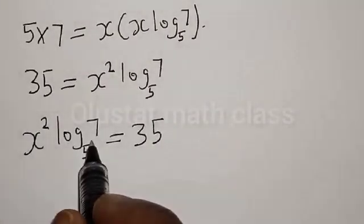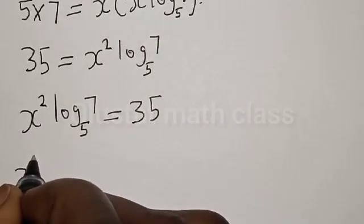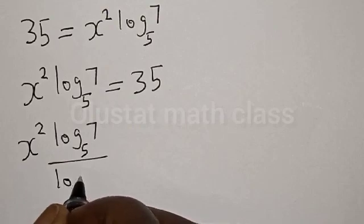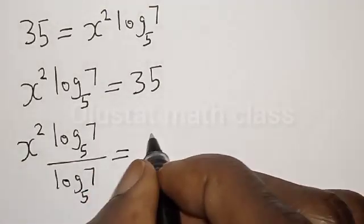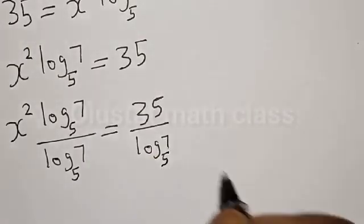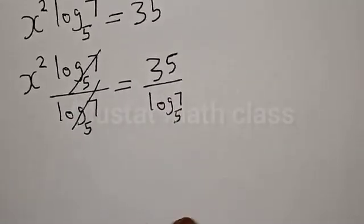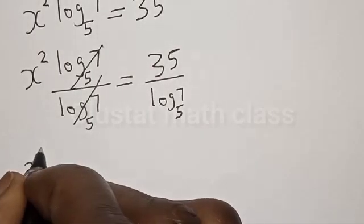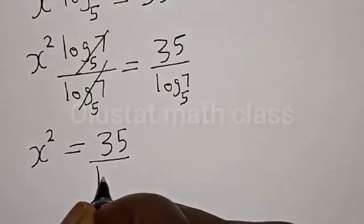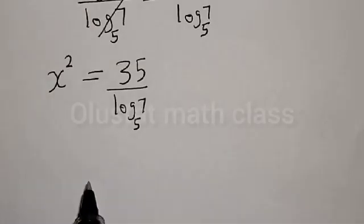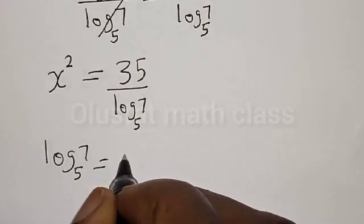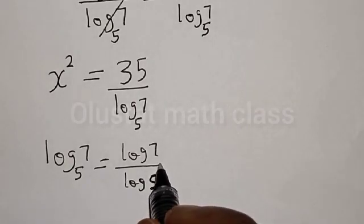Now let's divide both sides by log 7 base 5. We have x squared equals 35 divided by log 7 base 5. Note that log 7 base 5 is the same thing as log 7 divided by log 5, so let's replace it with this.